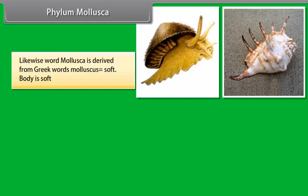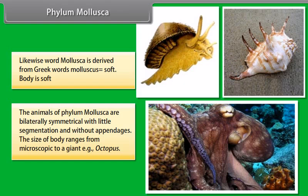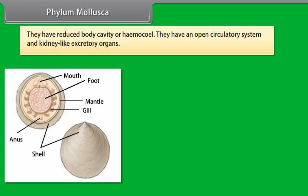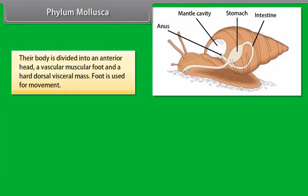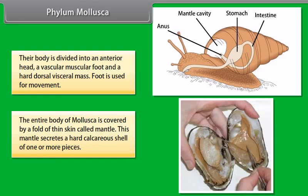Phylum Mollusca. The word Mollusca is derived from Greek word 'molluscas' meaning soft; the body is soft. The animals of Phylum Mollusca are bilaterally symmetrical with little segmentation and without appendages. The size of body ranges from microscopic to giant, that is octopus. They have a reduced body cavity or hemocoel. They have an open circulatory system and kidney-like excretory organs. Their body is divided into an anterior head, a vascular muscular foot, and a hard dorsal visceral mass. Foot is used for movement. The entire body is covered by a fold of thin skin called the mantle, which secretes a hard calcareous shell of one or more pieces.